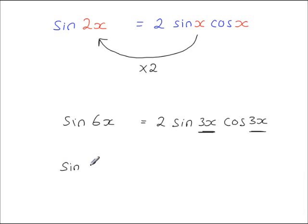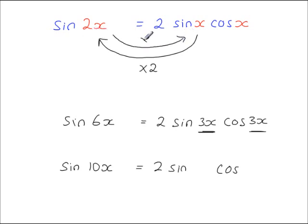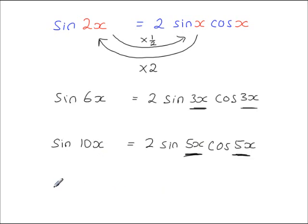If you start with sine 10x and want to rewrite it with half the angle, going from left to right you halve the angle. Halving 10x gives 5x, so sine 10x equals 2 sine 5x cos 5x. You can also have fractions: if you start with sine x, halving the angle gives a half x on each side, so sine x equals 2 sine(x/2) cos(x/2).